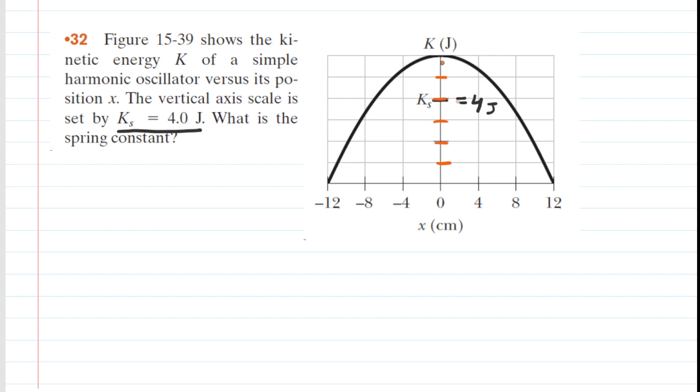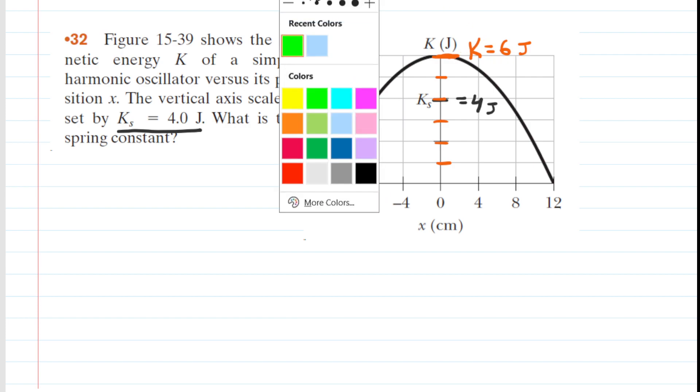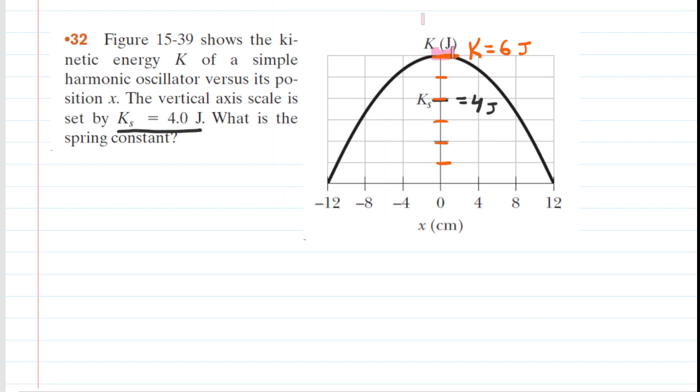Which means as we climb the vertical axis to this maximum right here, we're going to have a kinetic energy equal to 6 joules, because that's 6 tick marks up the vertical axis. So it's important to be able to come up with the value of that maximum kinetic energy. And let's explore that maximum kinetic energy right here, which has a value of 6 joules.